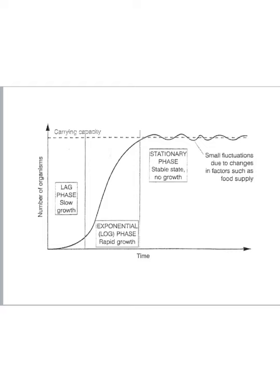The population growth curve can be divided into three main phases. Any population that newly inhabits an area will undergo these three main phases. These are the lag phase, which starts with slow growth; next, the exponential or log phase of rapid growth; and thirdly, the stationary phase — a stable state with no growth where births equal deaths. There will be small fluctuations due to changes in factors such as food supply, which will vary at different times of the year.